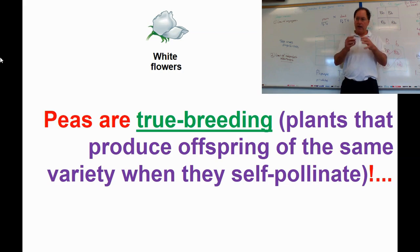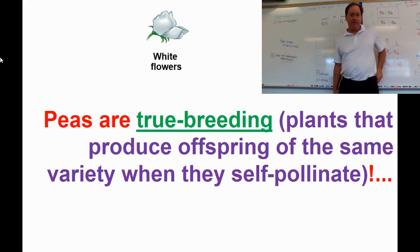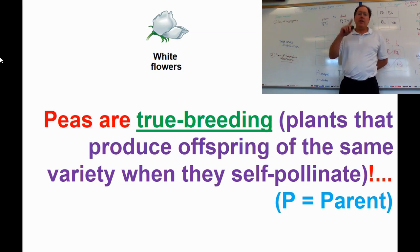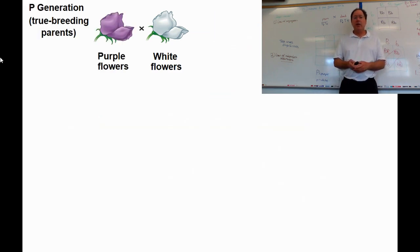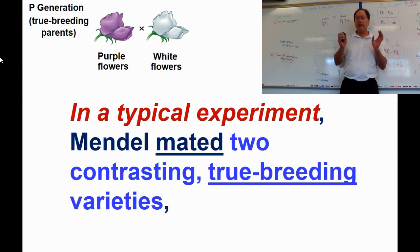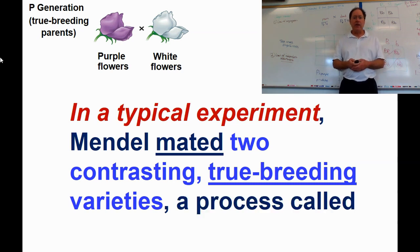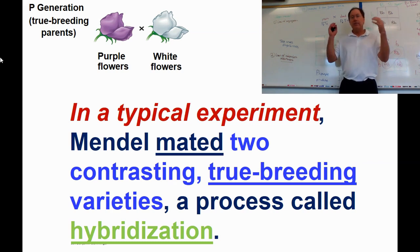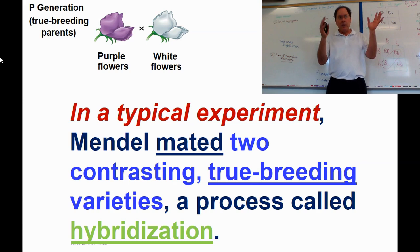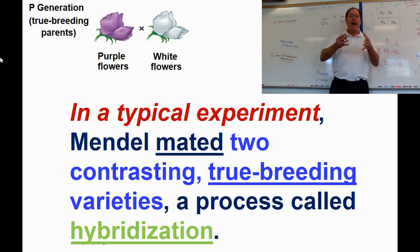He called them true-breeding when they self-pollinated for many generations and he never saw anything different in flower color. We call these the P generation — the true-breeding parents. He then took true-breeding parents that contrasted in the characteristic he was looking for and put them together in a process called hybridization. A hybrid would be like a hybrid car that does gas and electric — here he was putting together white factors with purple factors.